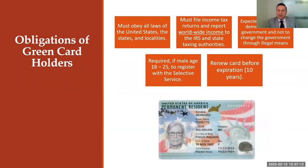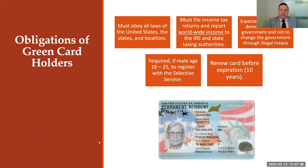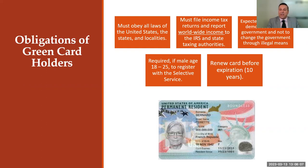However, there are obligations with the green card. You must obey all laws of the U.S. — federal, state, and local. For example, marijuana is still illegal at the federal level and can pose problems for a green card holder. You must file taxes on worldwide income to the IRS and state tax authorities. You must support the democratic form of government. If you are a male between the ages of 18 to 25, you must register with the Selective Service. Your green card is typically issued for 10 years and must be renewed before it expires.